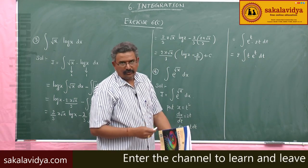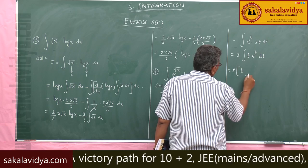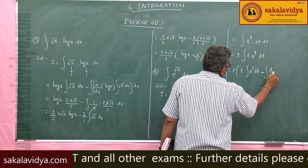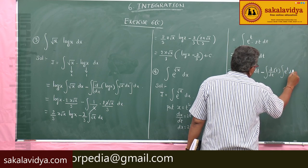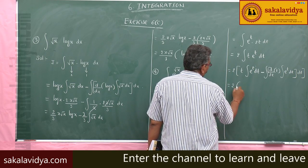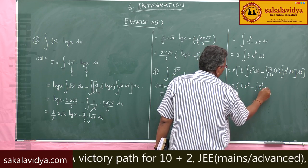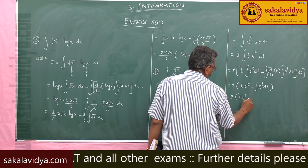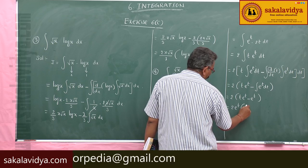Applying the LIATE rule again: t is algebraic (first), e^t is exponential (second). So: 2 times [t times e^t minus the integral of d/dt(t) times e^t dt]. This gives 2 times [t·e^t minus e^t], which equals 2e^t times (t − 1).